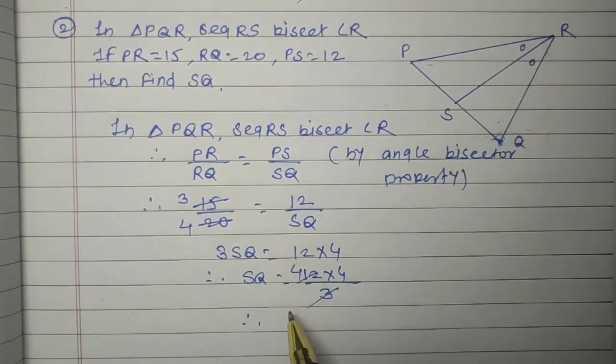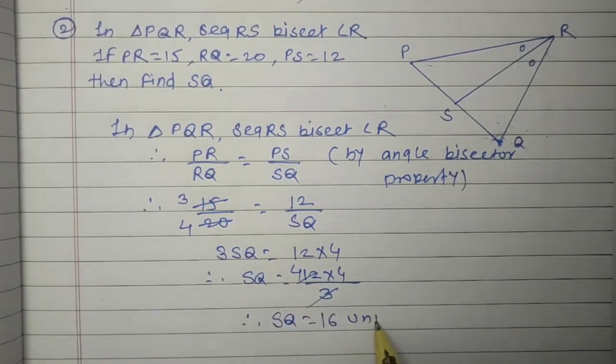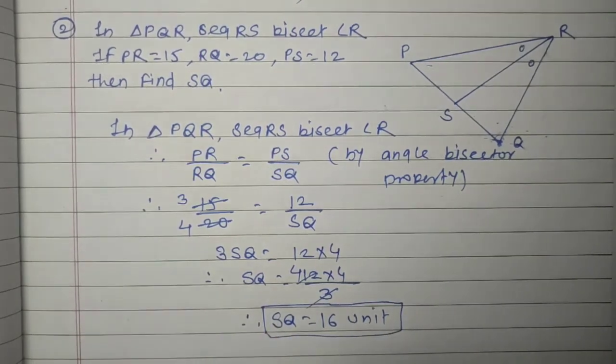3 fours are 12. And therefore, SQ equals 16 units. SQ equals 16 units. Okay? Isn't it?